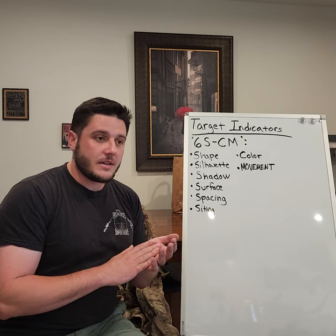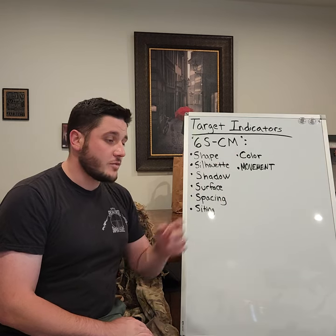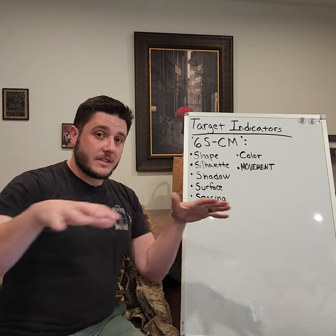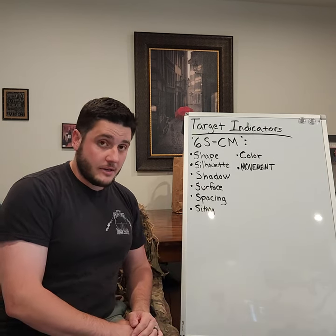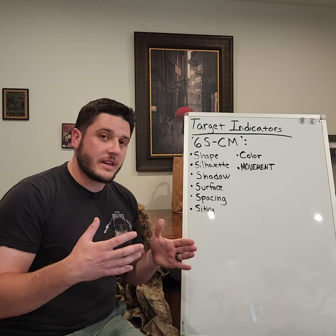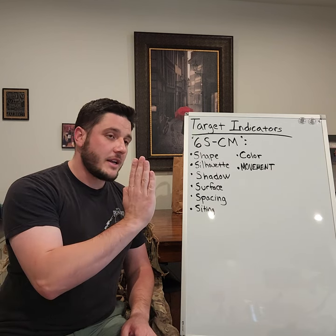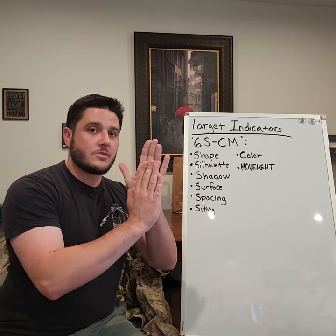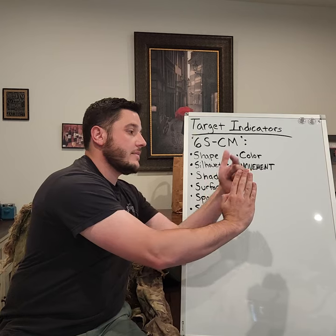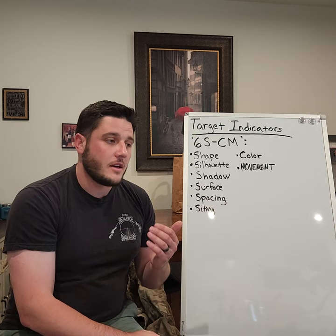Silhouette is listed right after shape because your silhouette is your outline — it's based on lighting and color. You want to try and match the color of both the foreground and the background. When utilizing terrain to move, you don't want to move across the top or crest of hillsides and get your body to where you don't have a backdrop of foliage, rocks, trees, or grass behind you. If it's just sky behind you, you have that silhouette.